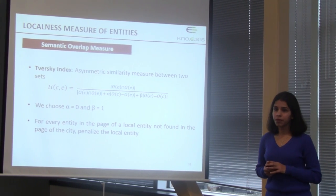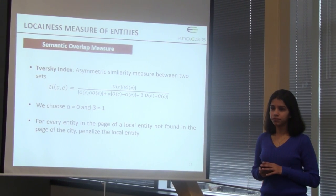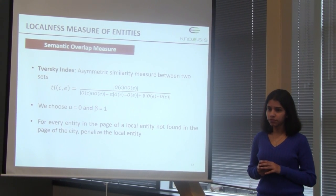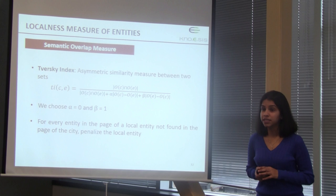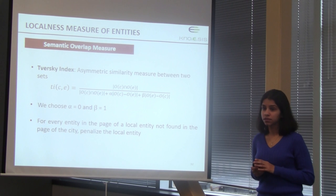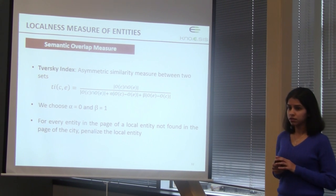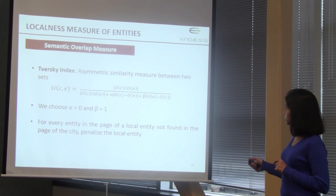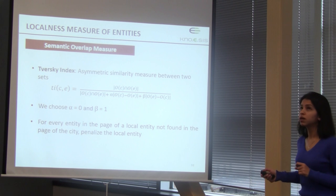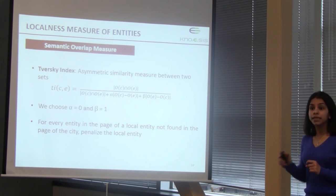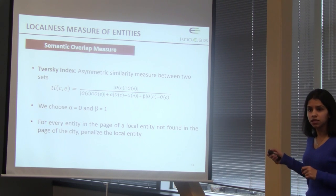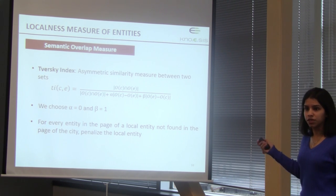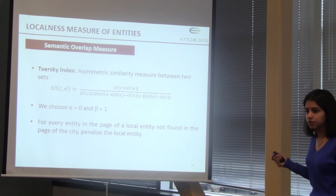A committee member asked whether alpha plus beta needs to equal 1. In this equation, yes, they do need to equal 1. The Tversky Index is highest when all concepts of the local entity match concepts in the city's Wikipedia page.